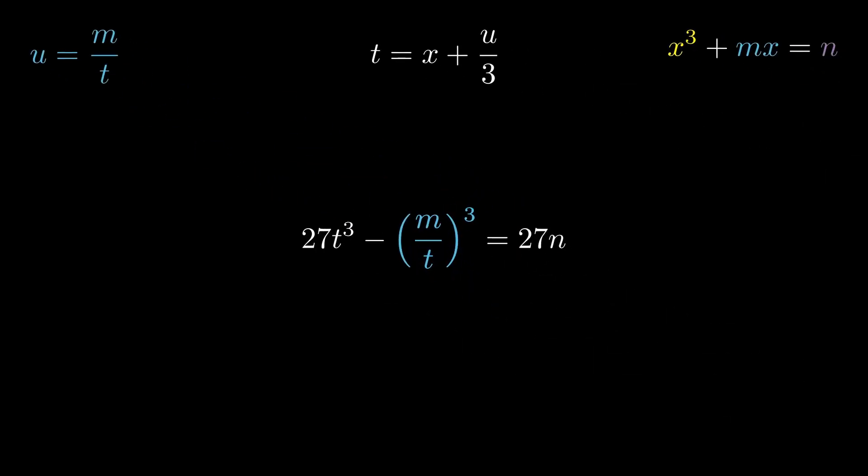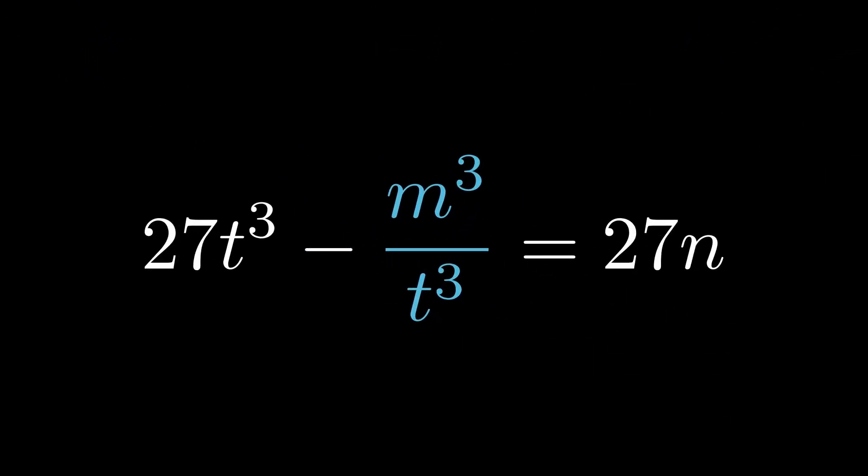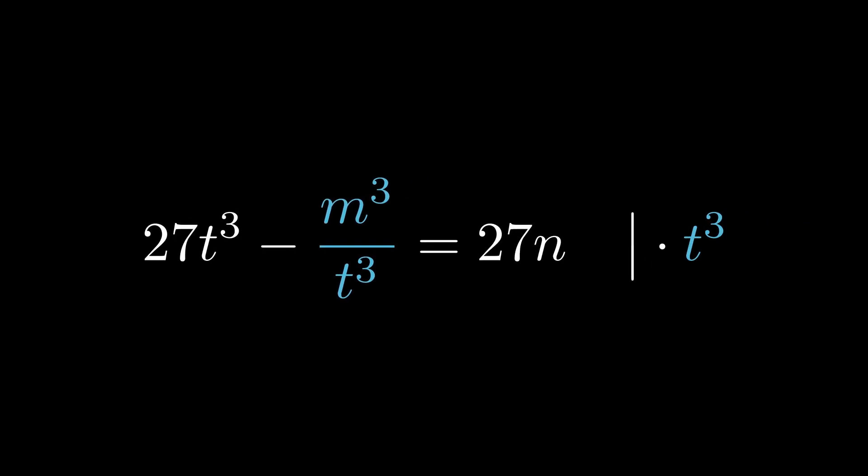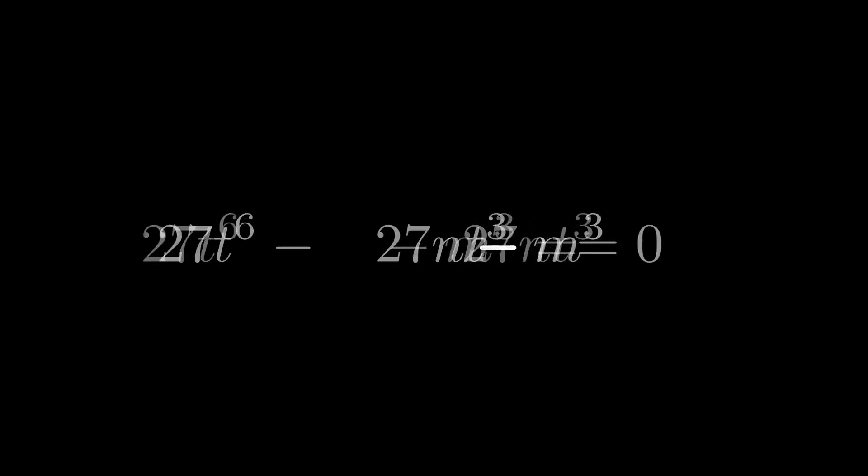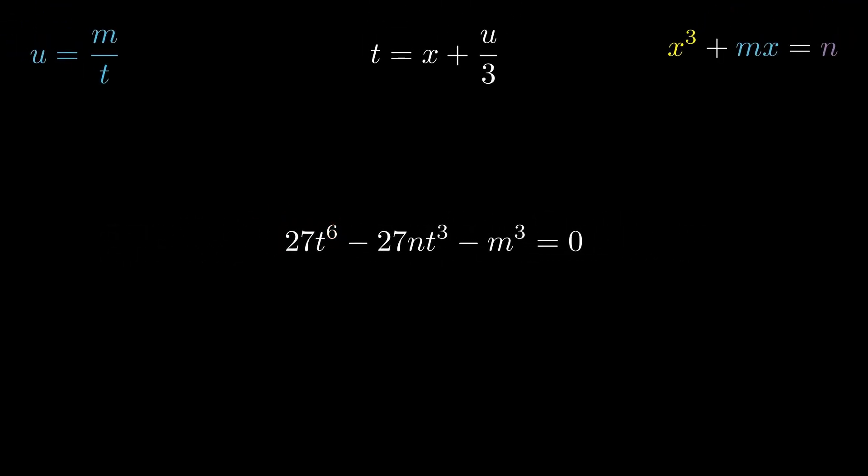Now, we can write out the (m/t)³ term and multiply by t³ on both sides to eliminate the denominator. Then, we can move the 27nt³ term to the left side. This will leave us with a 6 degree polynomial. Now, for some of you this might seem as a tougher challenge than what we started with, but if we just set k equal to t³ and make a substitution for t³, we will actually get a second degree polynomial in terms of k.